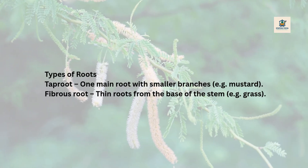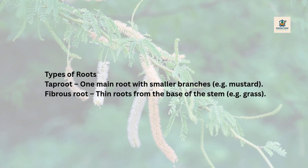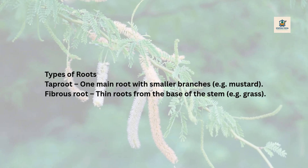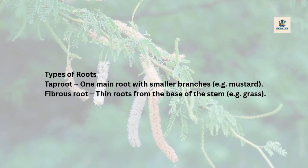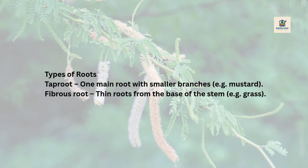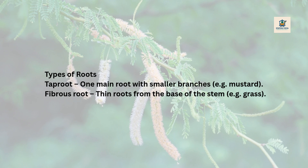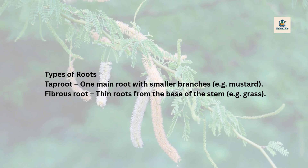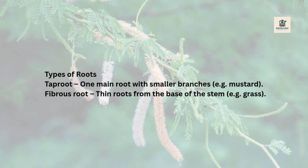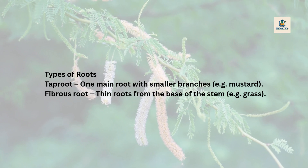Types of roots. Taproot: one main root with smaller branches, e.g. mustard. Fibrous root: thin roots from the base of the stem, e.g. grass.